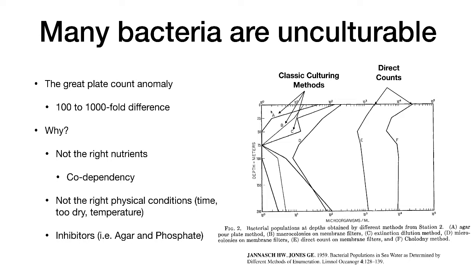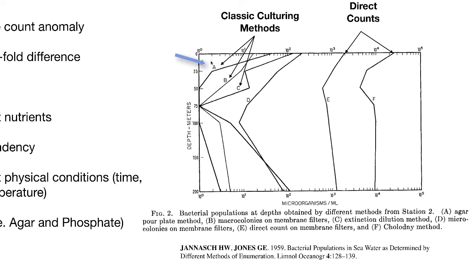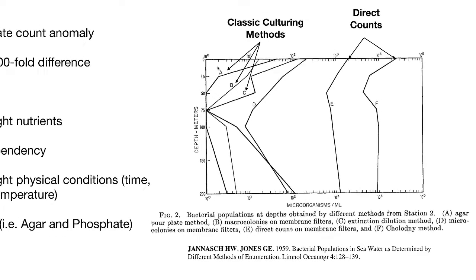A second issue may be that the right physical conditions for growth of many of these microbes is not being met. First among these is time — scientists are impatient people. They want their bacteria to grow up in just a few days. Many of these species may be growing slowly, taking days or weeks to increase in number high enough to be seen. Also, the temperature may not be right, or it could be too dry. Notice how plating on agar — line A — is always lower than growing in liquid — line C. Agar has a lower water content, and that can inhibit many organisms.